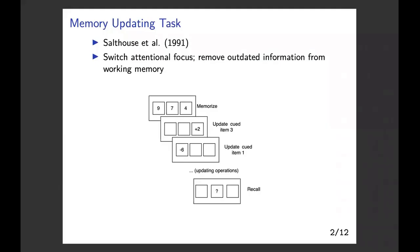The memory updating task measures working memory capacity. It focuses on the ability to switch attentional focus and to remove outdated information from working memory. In each trial, there are three stages. In the first memorization stage, participants memorize a list of items and their corresponding locations. In the second updating stage, the participant conducts a sequence of updating operations based on the cue. In the final recall stage, the participant recalls all items after all the updating operations.